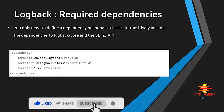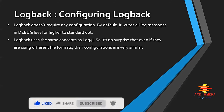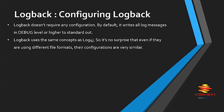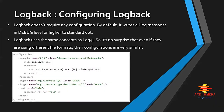Logback doesn't require any configuration by default — it writes all log messages at DEBUG level or higher to standard out. You can change that with a custom configuration file in XML or Groovy format. Logback uses the same concepts as Log4j, so even though they use different file formats, their configurations are very similar. After adding the required dependencies and configuring Logback, you can use it to write log messages via the SLF4J API. If you want to benefit from Logback's improvements, you don't need to change any code to replace Log4j with Logback.